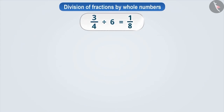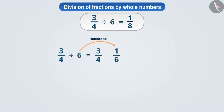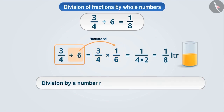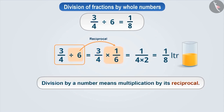To solve three by four divided by six in mathematics, we first write the number three by four as it is, then multiply it by the reciprocal of six, that is one by six. The result we get is one by eight. Three-fourth divided by six is equal to three by four into one by six, which is equal to one by eight. So each child will get one-eighth litre of juice. Keep in mind that division by a number means multiplying it by its reciprocal.